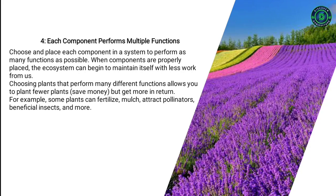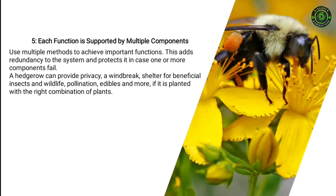Principle four: Each component performs multiple functions. Choose and place each component in a system to perform as many functions as possible. When components are properly placed, the ecosystem can begin to maintain itself with less work from us. Choosing plants that perform many different functions allows you to plant fewer plants, save money, but get more in return. For example, some plants can fertilize, mulch, attract pollinators, beneficial insects, and more.